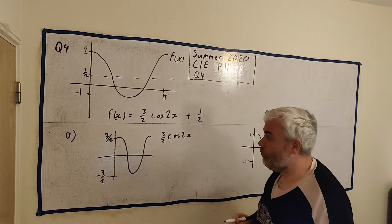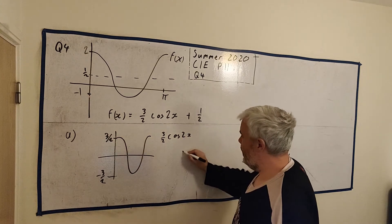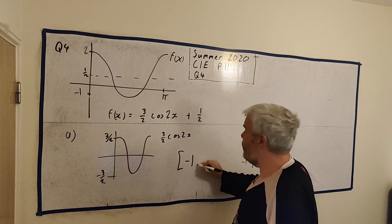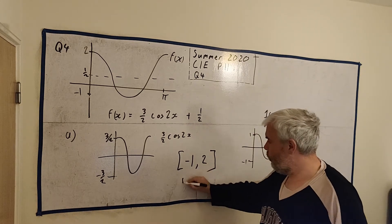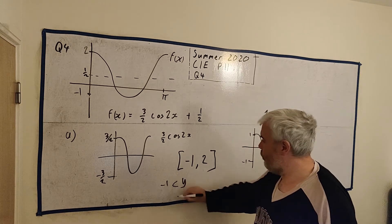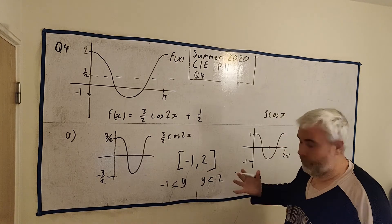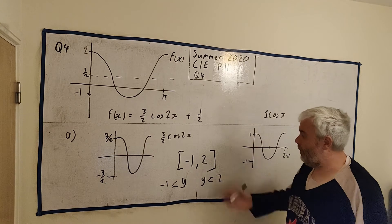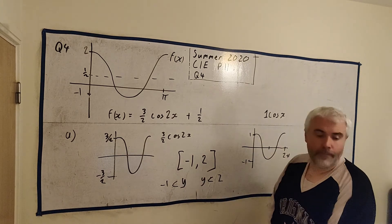So again, to answer the question for part A, what is the range of this function? Well, the range is, we write it like this usually, minus 1 and 2. Or you might want to write y is bigger than minus 1 and y is less than 2. Something like that is fine. But really, this bracket here is fine. Just say range equals this. Alright, let me rub that out and I'll do part B.